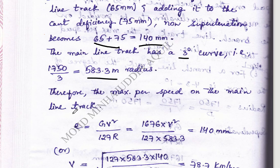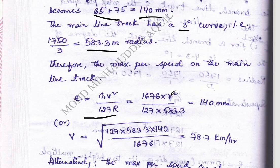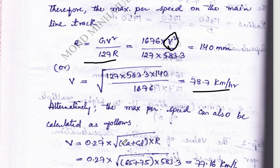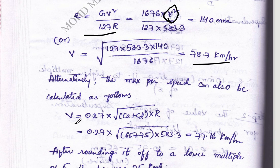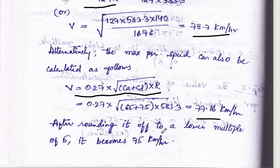The maximum permissible speed on the main line track is calculated using e = GV²/127R, solving for V. Additionally, V can be verified using V = 0.27 × √(Ca + CD) × R. After rounding off to the lower multiple of 5, the maximum permissible speed on the main line is 75 km/h.